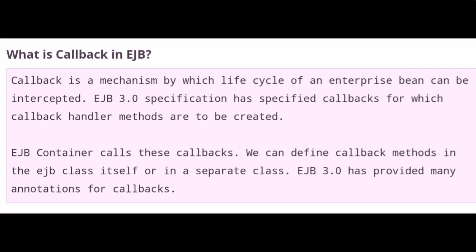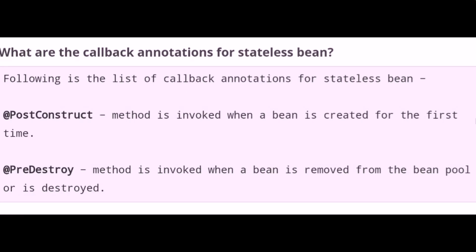What is a callback in EJB? A callback is a mechanism by which the lifecycle of an enterprise bean can be intercepted. The EJB 3.0 specification has specified callbacks for which callback handler methods are to be created. The EJB container calls these callbacks. We can define callback methods in the EJB class itself or in a separate class. EJB 3.0 has provided many annotations for callbacks. What are the callback annotations for a stateless bean? They are @PostConstruct and @PreDestroy. The @PostConstruct method is invoked when a bean is created for the first time, and the @PreDestroy method is invoked when a bean is removed or destroyed from a bean pool.